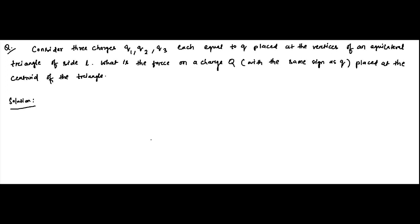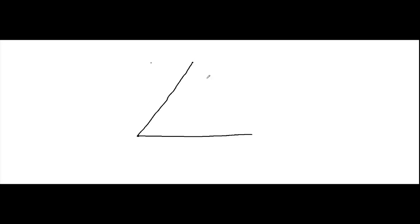Capital Q charge is placed at the centroid of the triangle. This is the given data. Now we have to convert it into an accurate diagram. We will draw an equilateral triangle here. This is the equilateral triangle. We have points A, B, C. The charges present at the vertices are all equal to Q — same value.